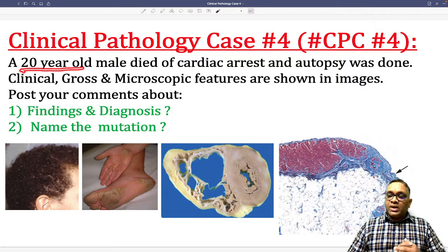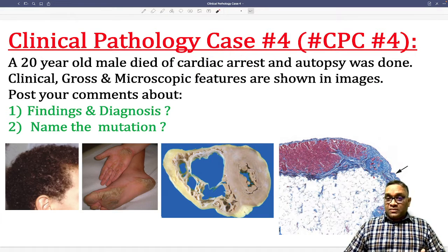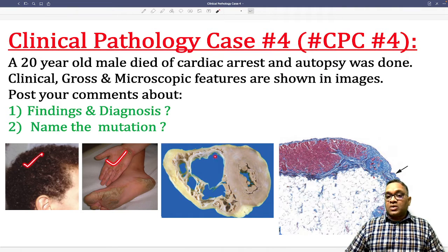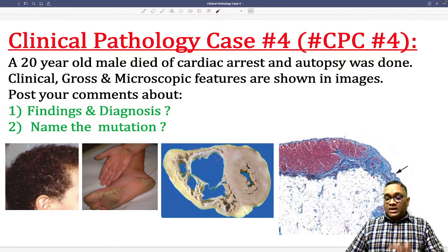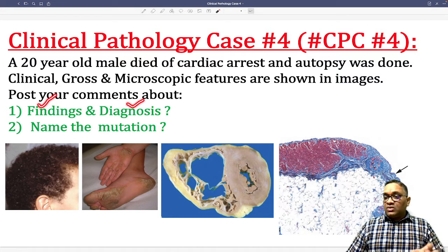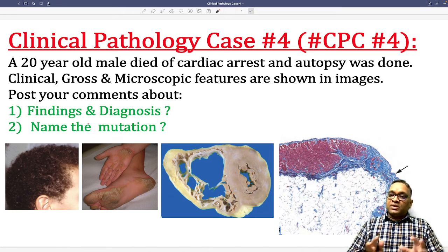This question was about a 20-year-old male who died because of cardiac arrest. After that, autopsy was done. His clinical findings, gross findings, and microscopic findings are given. What we have to tell is the findings and the diagnosis of this condition and which mutation is responsible for this appearance.